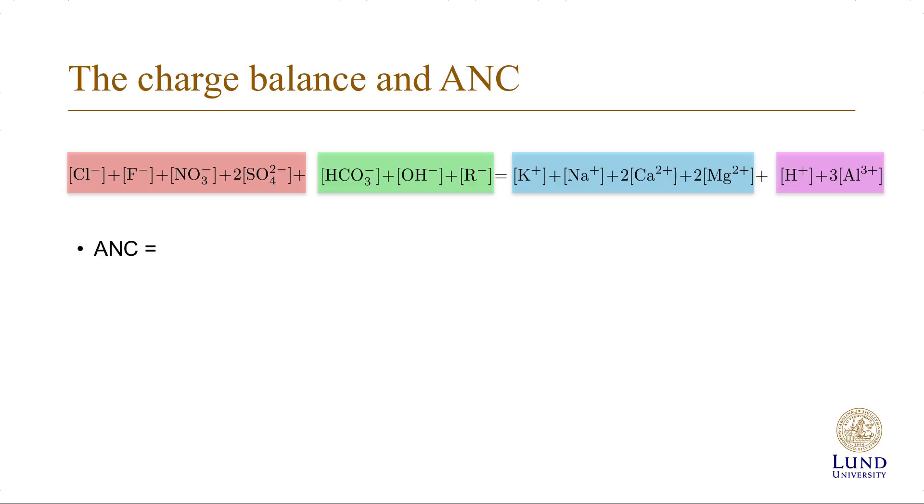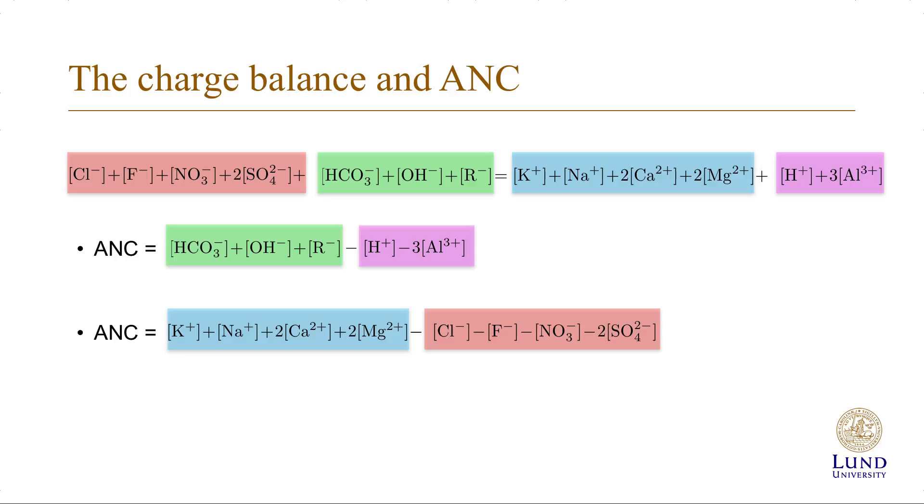And this results in two different definitions of the acid neutralizing capacity, the ANC. One is the difference between the anions to the weak acids minus the cations to the weak bases. And the other one is the cations to the strong bases minus the anions to the strong acids.